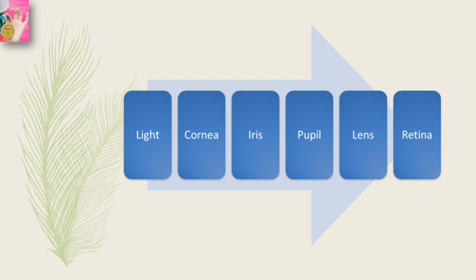Behind the cornea is a substance very much like thickened water called aqueous humor, which keeps the front of the eye firm and slightly curved. Light travels through this fluid to reach the iris, and from there it passes through the pupil and on to the crystalline lens behind it. The lens is a transparent, elastic structure filled with a gelatinous material. The function of both the cornea and the lens is to focus incoming light at the back of the eye — this is how light passes from the cornea to the retina.